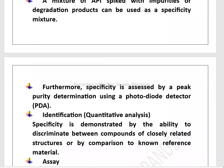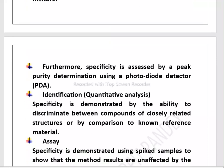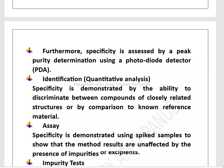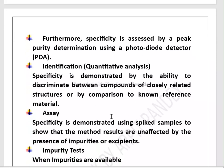If you perform specificity in an identification method or quantitative analysis, specificity is demonstrated by the ability to discriminate between the compound and closely related structures, or by comparison to a known reference material. In assay, specificity is demonstrated using spiked samples to show that the method results are unaffected by the presence of impurities or excipients.